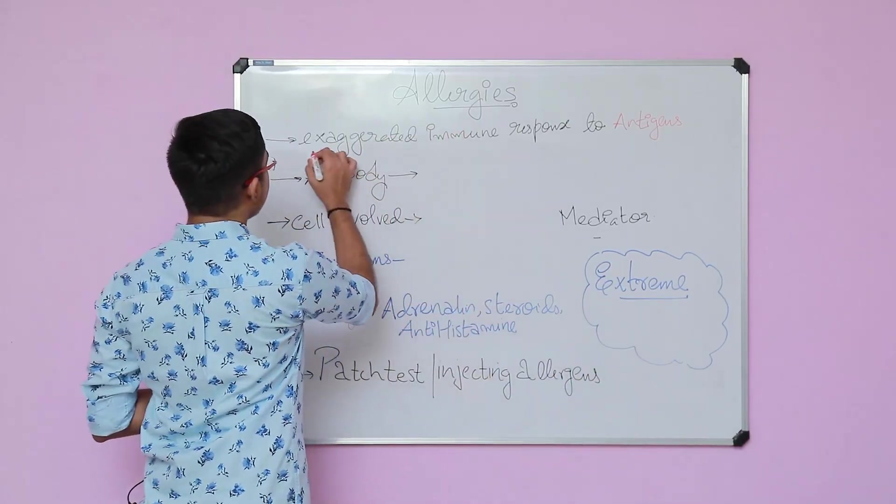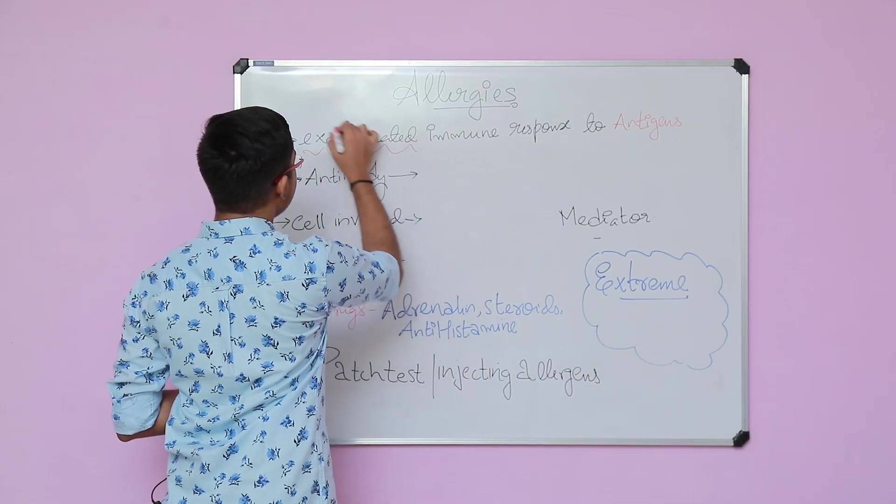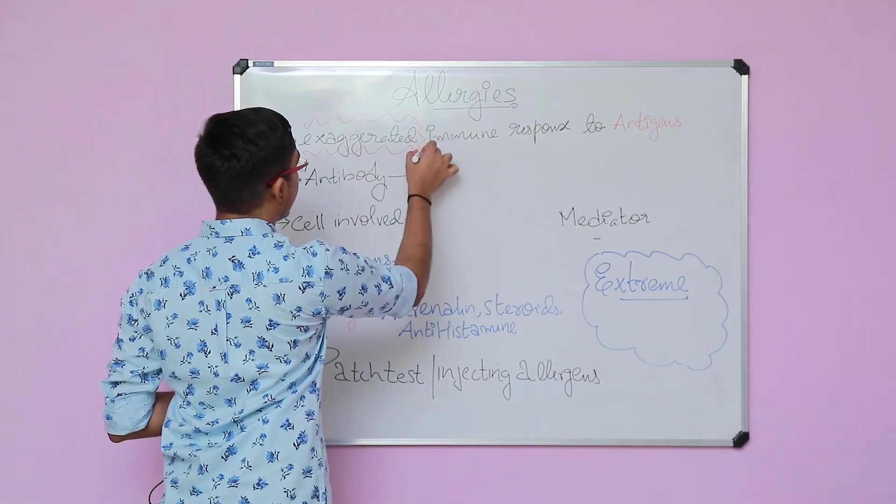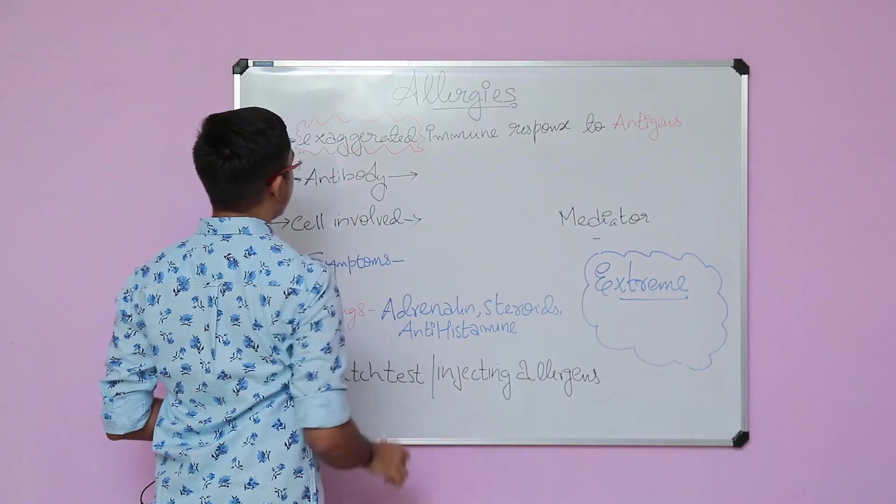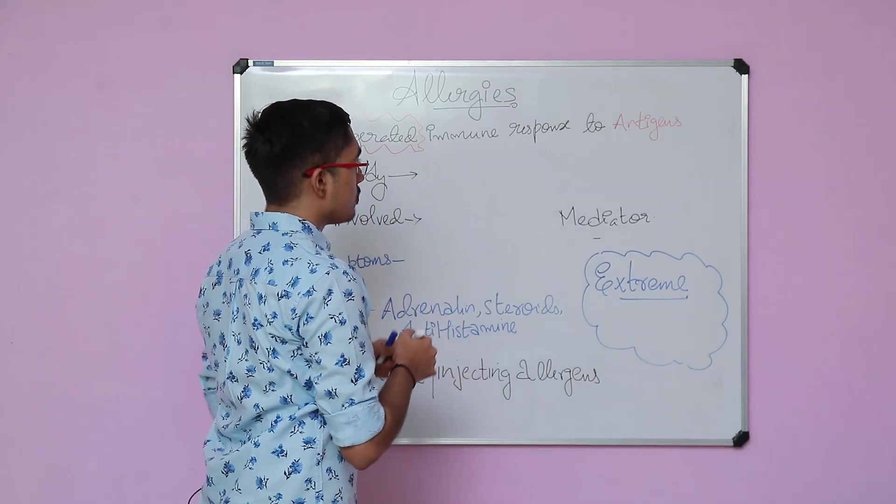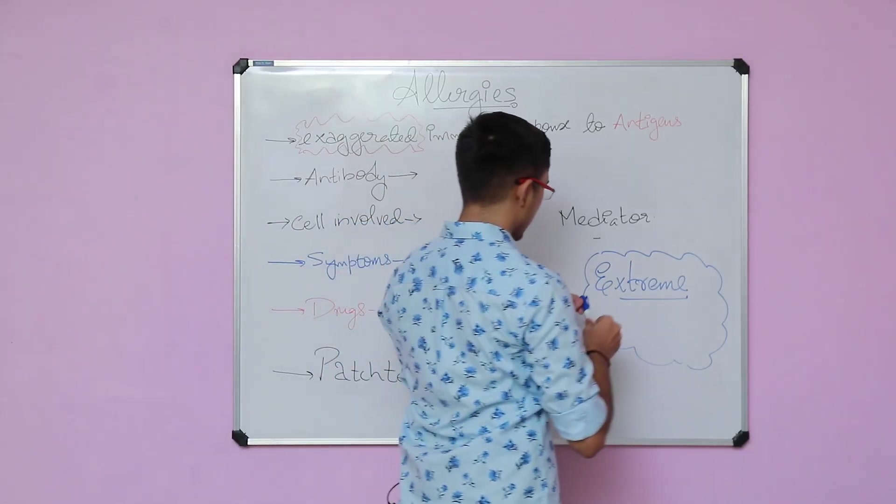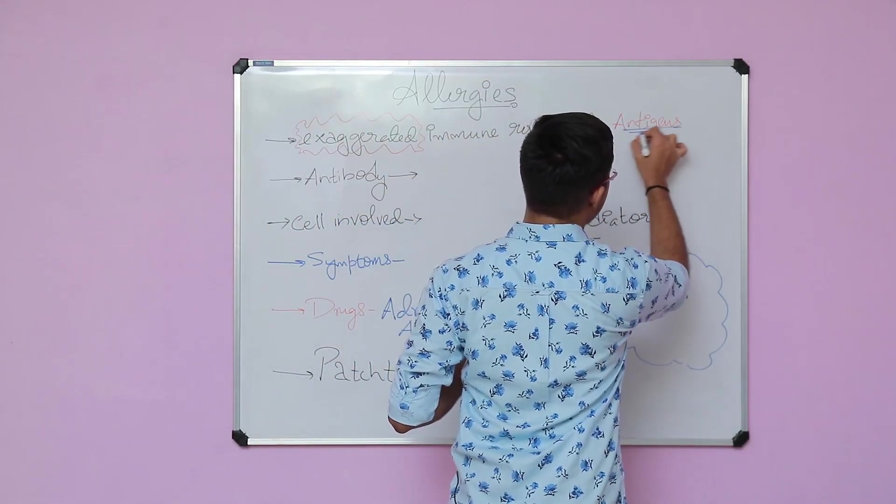That is why this word 'exaggerated' has so much importance in the definition. In the definition part, this word has to be given so much importance. Now antigens, where are these antigens present? In the environment.